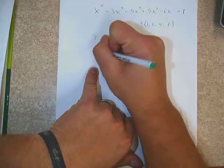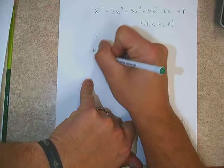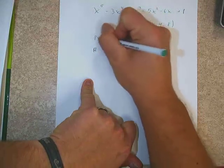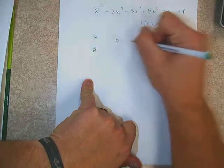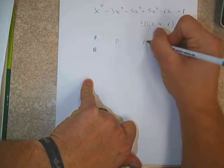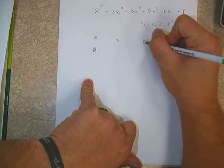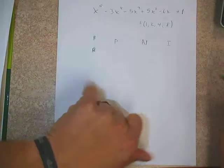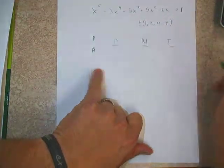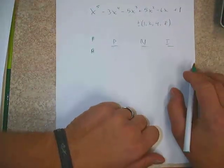Before I do that, I'm going to make a little list because I'd like to know what my possibilities are. I'm going to write down positive, negative, and imaginary, just so I have an idea of what my solutions are going to be like.